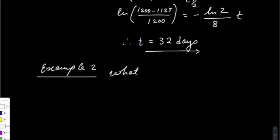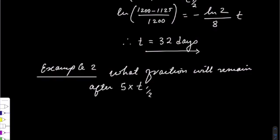What fraction will remain after 5 times the half-life? Here we can use x is equal to 1 over 2^y, where y is the number of half-lives.